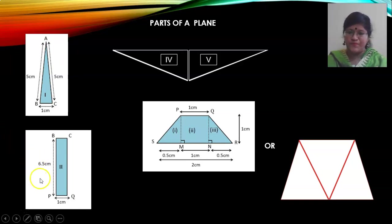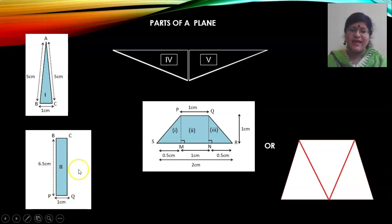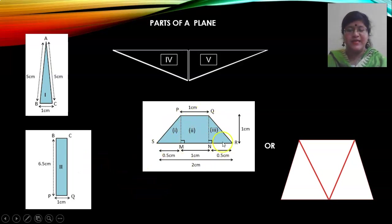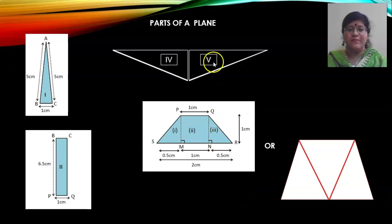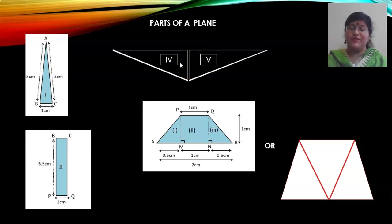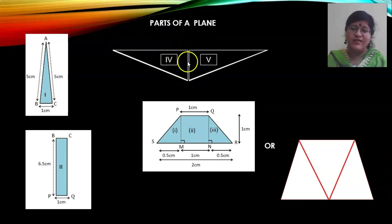Then we move to part 2. Part 2 is rectangular in shape — rectangle BCQP. You will use the area of a rectangle to find the area of part 2. Then comes part 3, which is the bottom of the plane, the tail. It is in the shape of a trapezium, and there are two ways of solving part 3. Then you have part 4 and part 5, which are the wings of the plane — right angle triangles. We have to calculate the area of these two triangles.